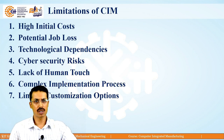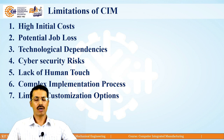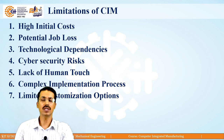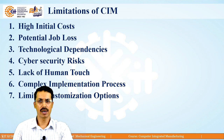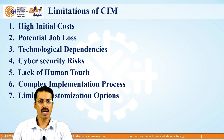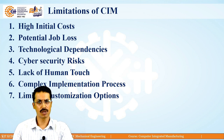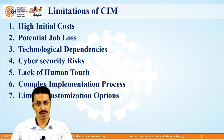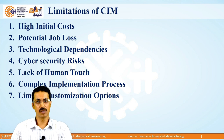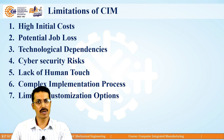Now let us discuss the limitations of the CIM system. These are the limitations — not disadvantages — of the Computer Integrated Manufacturing system. The main limitation is high initial investment. Whenever we go for implementation of CIM, a huge amount of investment is initially required, which may be in high-end machines as well as the software and hardware required for implementation.